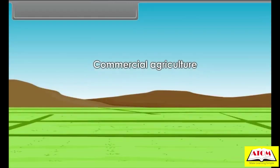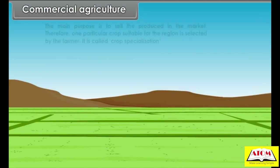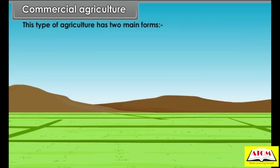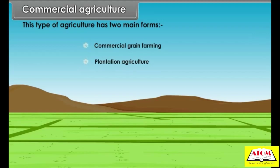Commercial agriculture: the main purpose is to sell the produce in the market. Therefore, one particular crop suitable for the region is selected by the farmer — this is called crop specialization. This type of agriculture has two main forms: commercial grain farming and plantation agriculture.